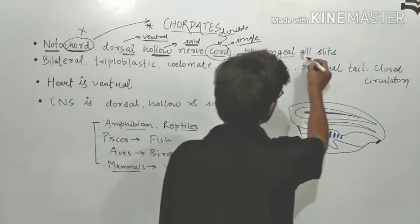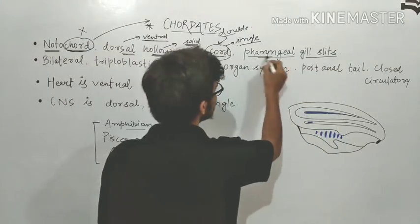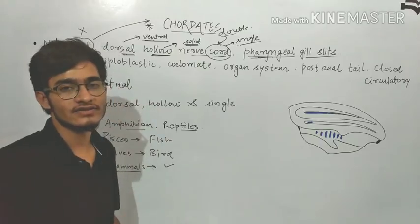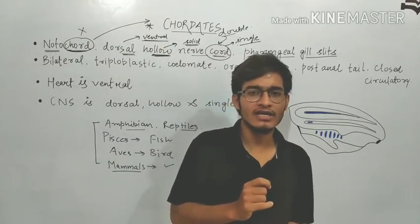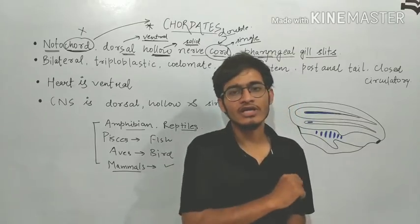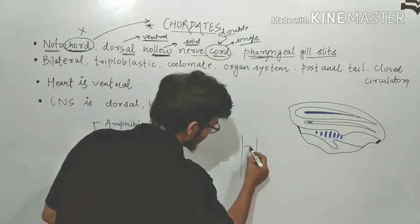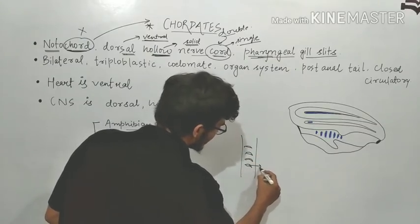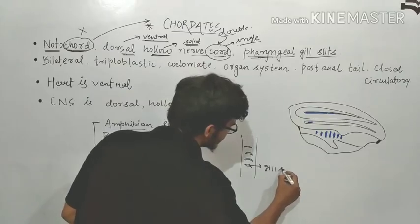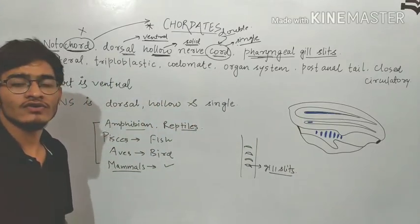After that, the pharyngeal gill slits are present. Now, pharyngeal contains the word pharynx. So inside the pharynx, gill slits are present. It means that the pharynx is perforated by gill slits. If you talk about pharyngeal gill slits, then there are gill slits present. It is perforated at many places by the presence of those gill slits. This is the third feature of chordates.